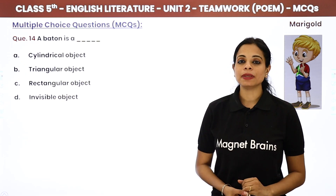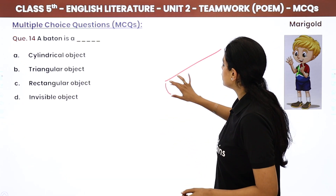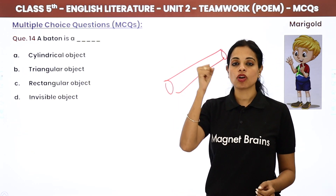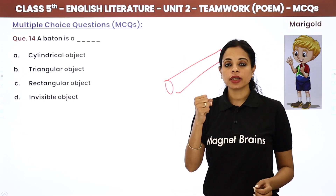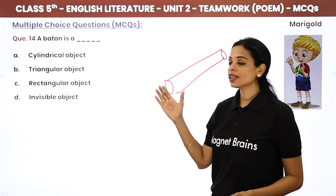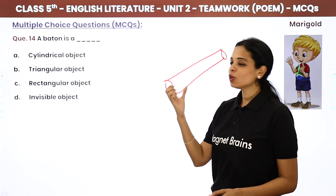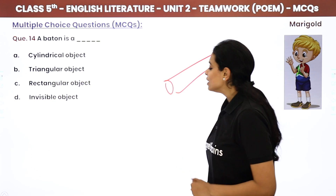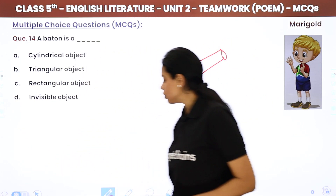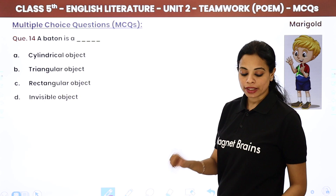Baton kya hota hai? I told you — baton is a cylindrical object that you hold and run with. Options are cylindrical, triangular, rectangular, or invisible. The answer is cylindrical — not triangular, not rectangular.